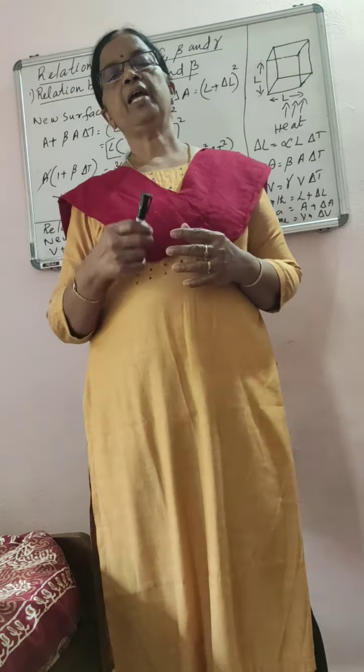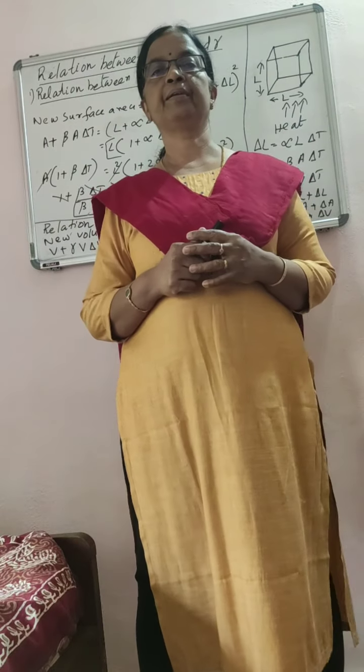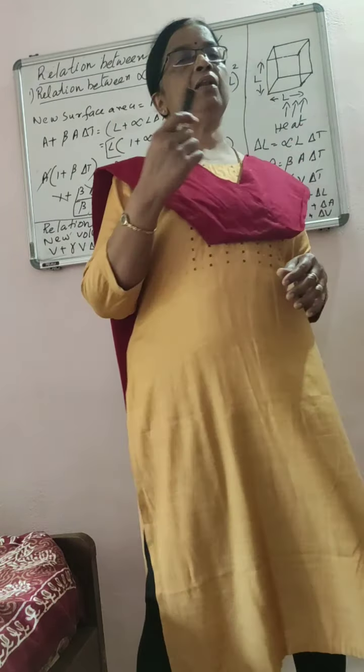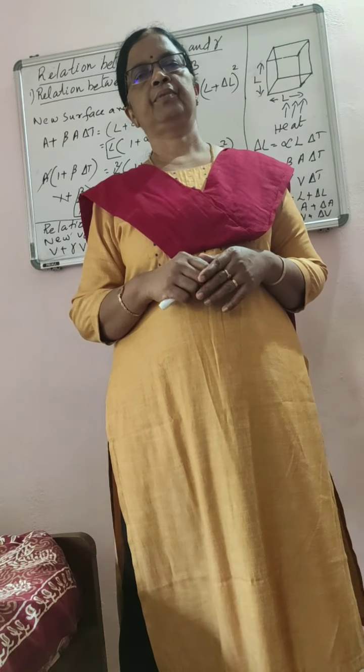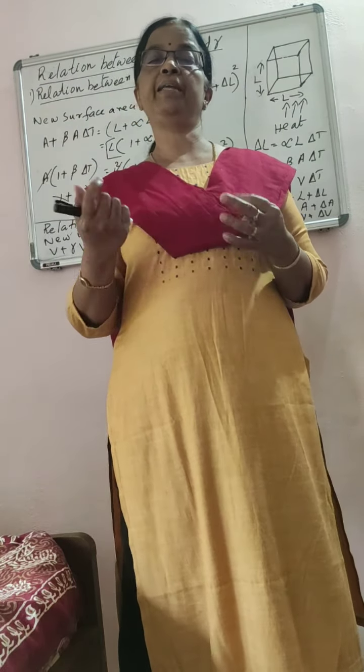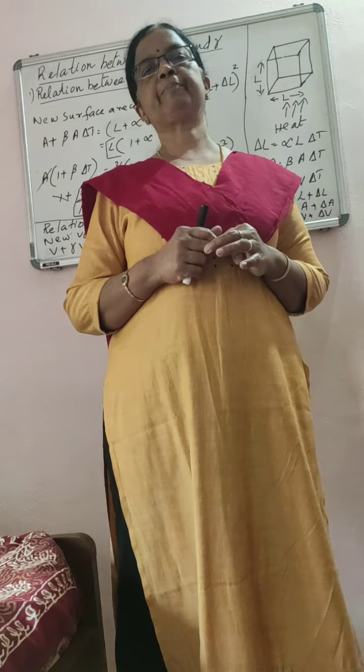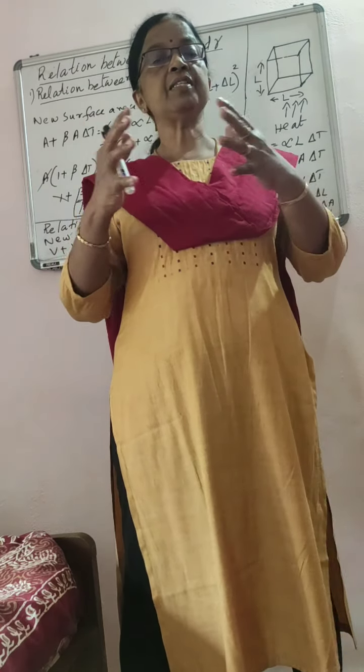Today we will be discussing the relation between alpha, beta, and gamma. What is alpha, beta, and gamma? Alpha is the coefficient of linear expansion, beta is the coefficient of area expansion, and gamma is the coefficient of volume expansion. And what is the relation connecting them? Let us see that.